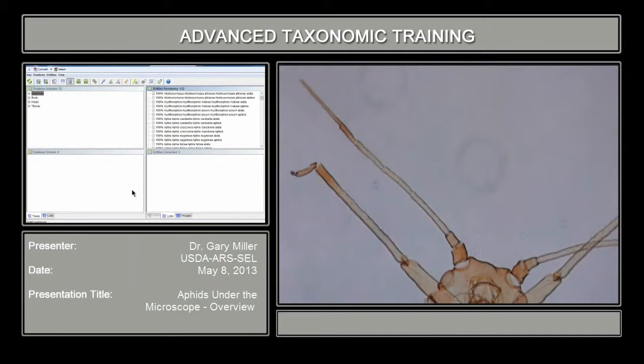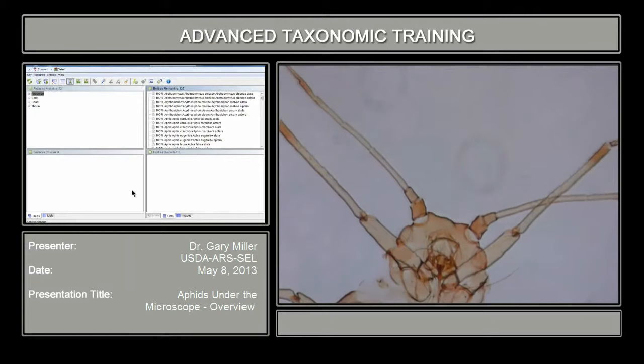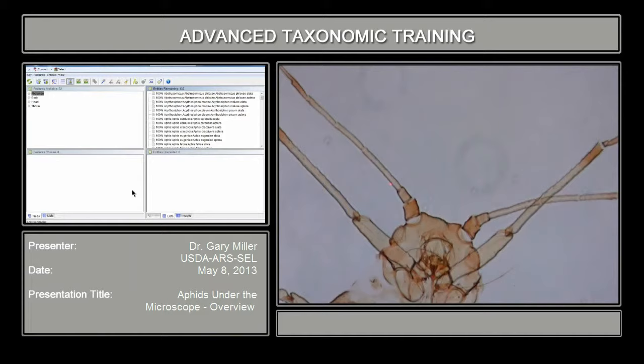There are other structures on the antenna that are important as well. The third antennal segment, shown here, is important because not only are you measuring that segment often, but you're also looking at various structures on it. There are structures called rhinaria — some folks call them sensoria — and these structures are counted often, and in some cases measured. In some keys they even include distribution on that antennal segment, whether they're in a line or scattered.